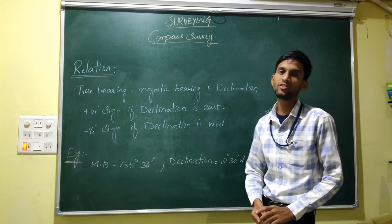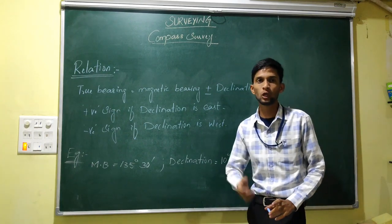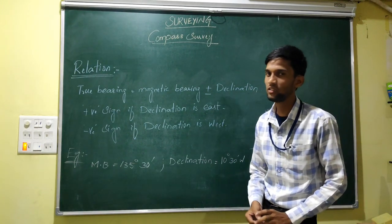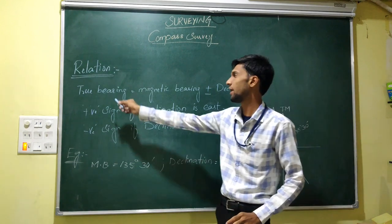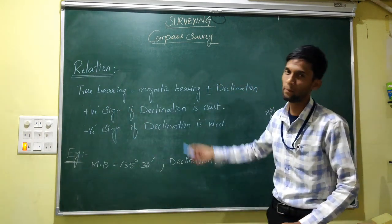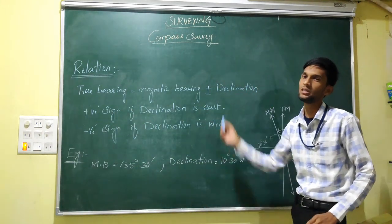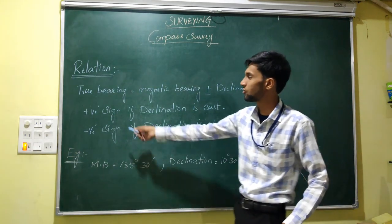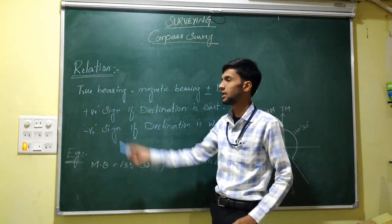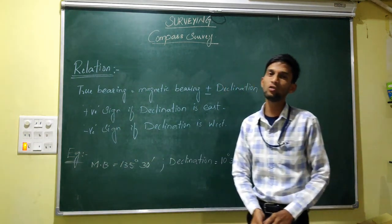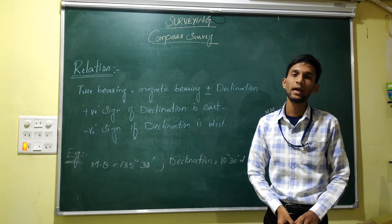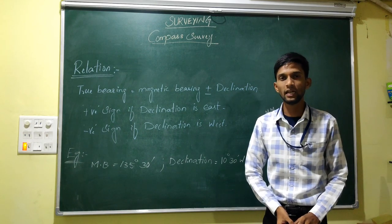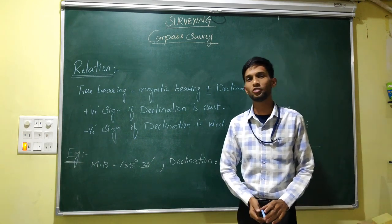What is the relation between the true bearing and the magnetic bearing? The relation is: true bearing equals magnetic bearing plus or minus declination. The positive sign is used when the declination is east, and the negative sign is used when the declination is west.